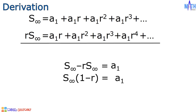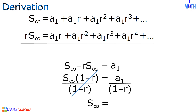To solve for sum to infinity, we need to divide both sides by 1 minus r. Sum to infinity times the quantity 1 minus r divided by 1 minus r equals sum to infinity, and it is equal to a sub 1 over 1 minus r. This is the formula for finding the sum of the terms of an infinite geometric sequence.